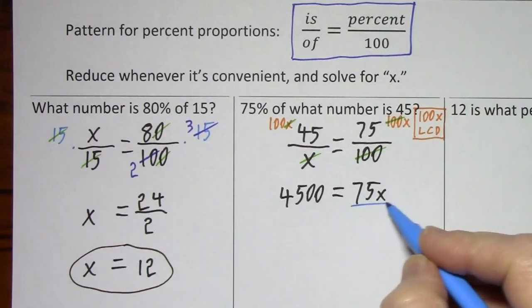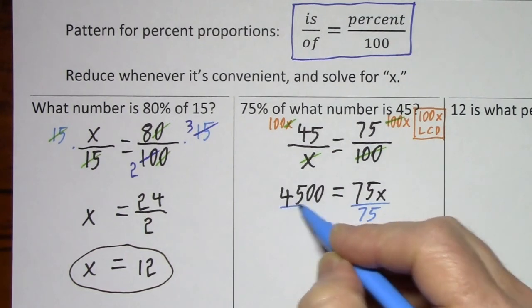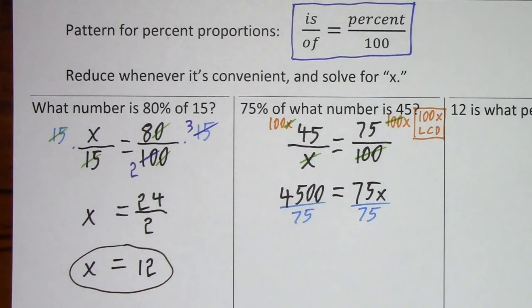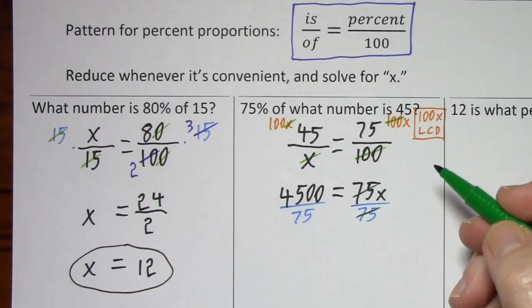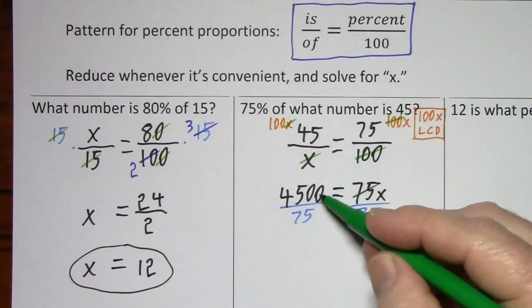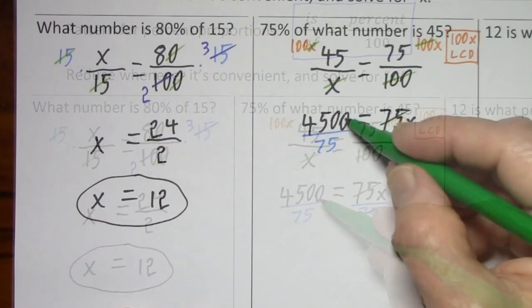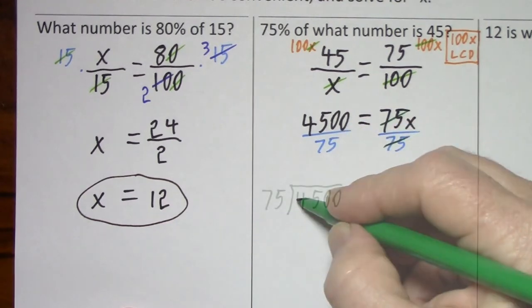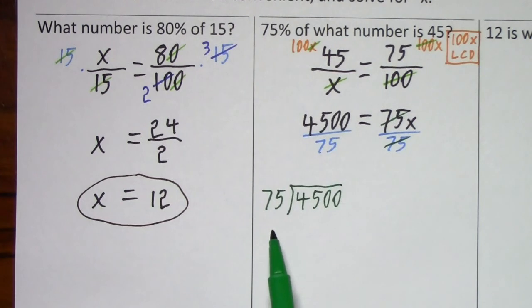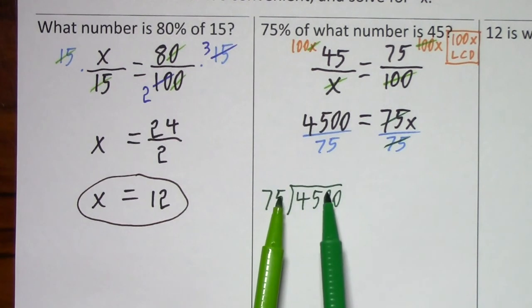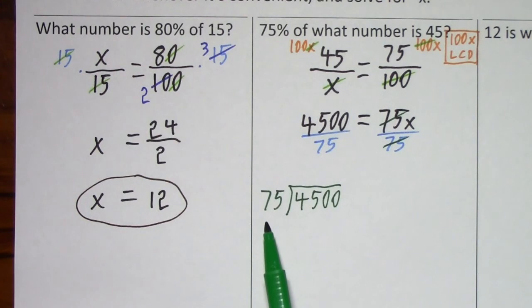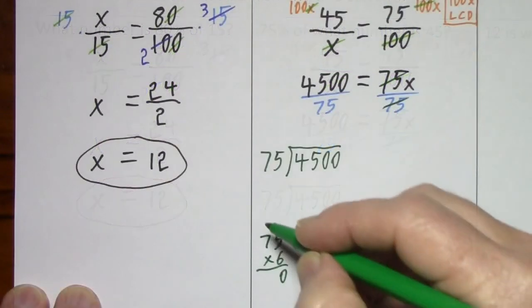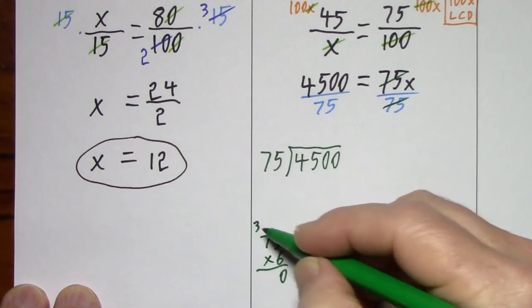Get rid of the 75 with division on each side. Of course here, 75 goes into 75 once. Over here, again, I could reduce, but I'm just going to go ahead and do the long division. So 4500 divided by 75, and it's probably hard to think of how many times does 75 goes into 450. But if you cover a digit and cover a digit, 7 goes into 45 six times. So we'll try 6 times 75, and see if that works.